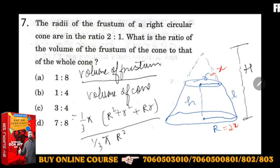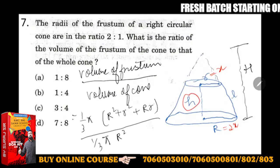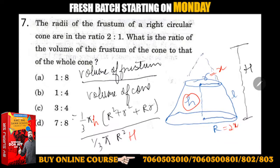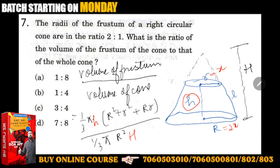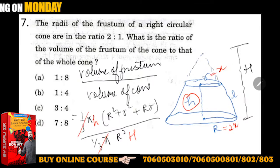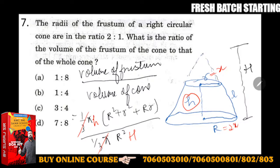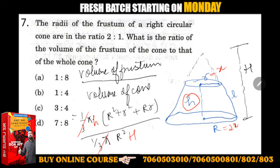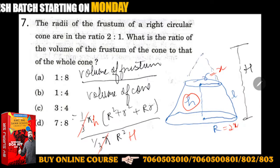One by three π will cancel. Now put the value of R - can you write capital H in terms of small h? Radius is also given to you.